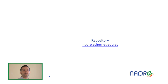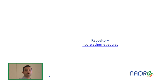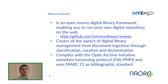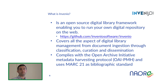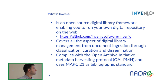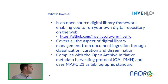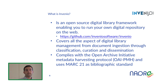Let me start from the repository. This is the link at which you can find it, and tomorrow we will use this repository to do some hands-on with you. The technology behind the repository is based on Invenio — an open source digital library framework enabling you to run your own digital repository on the web. The source code is available on GitHub. Invenio has many features; for example, it covers all the aspects of digital library management.